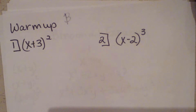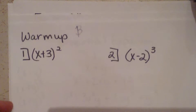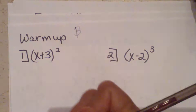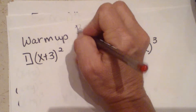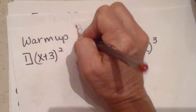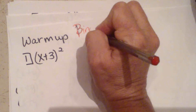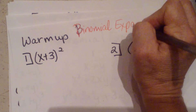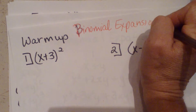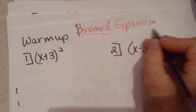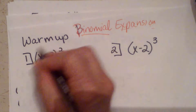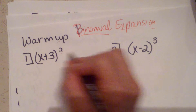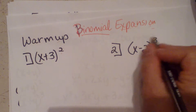Hi, welcome to Moo Moo Math. Today we're going to talk about the binomial theorem and learn how to do binomial expansion. So what that means is we're going to take a binomial and expand it, which means just to multiply it. It's going to look like a binomial raised to a power.